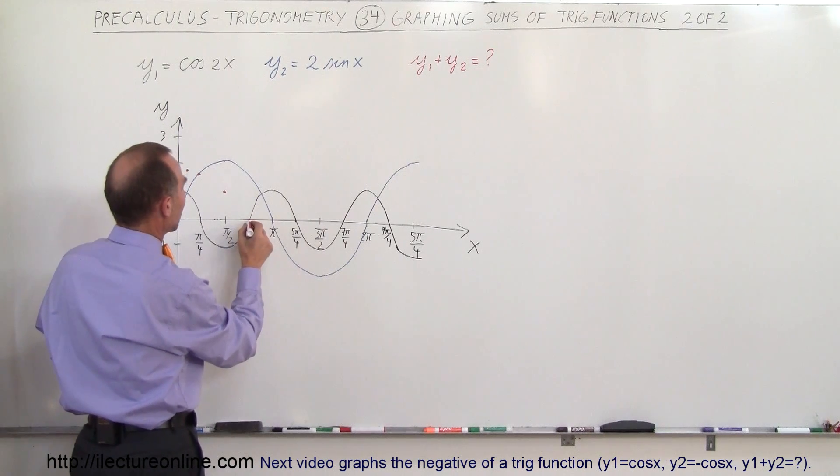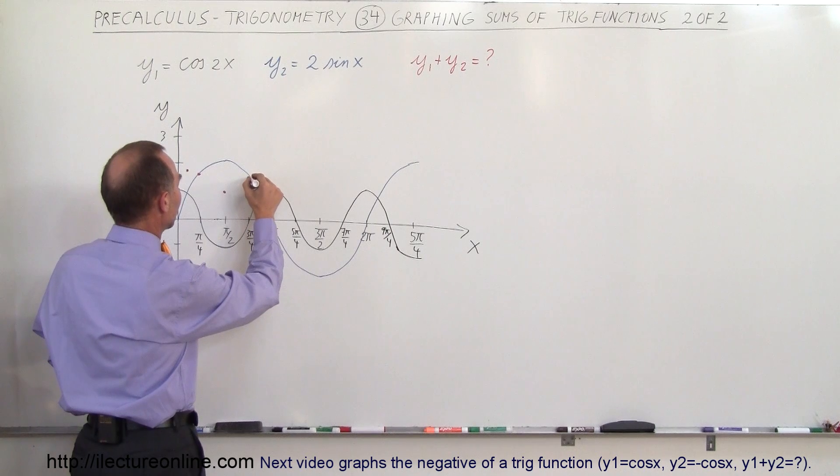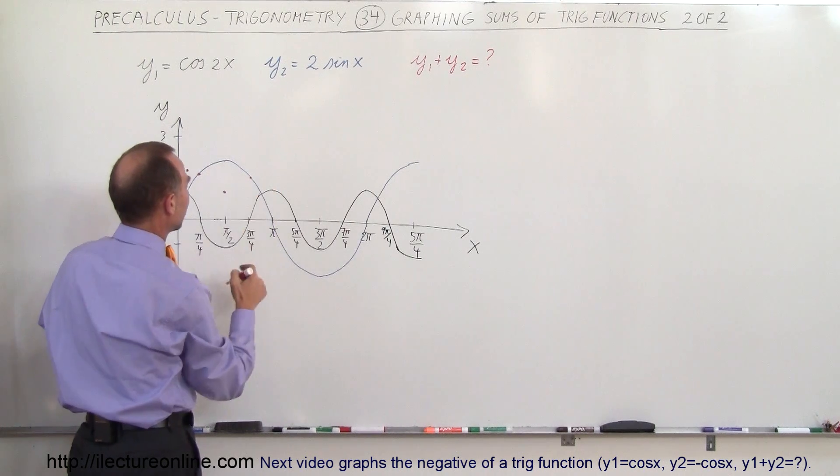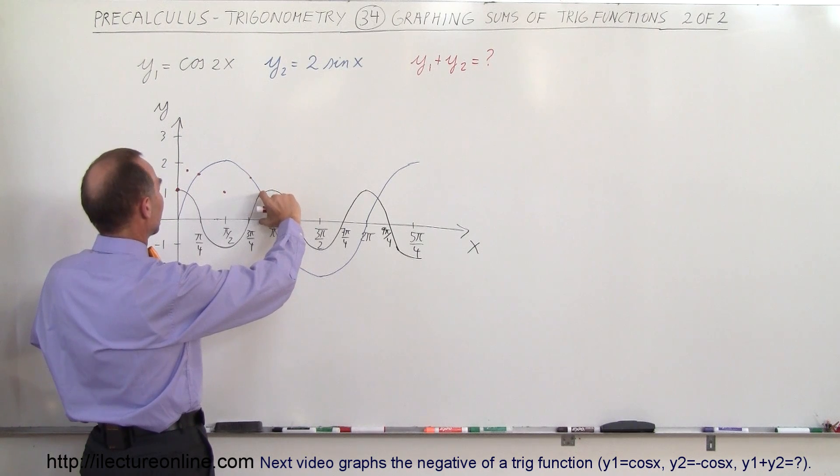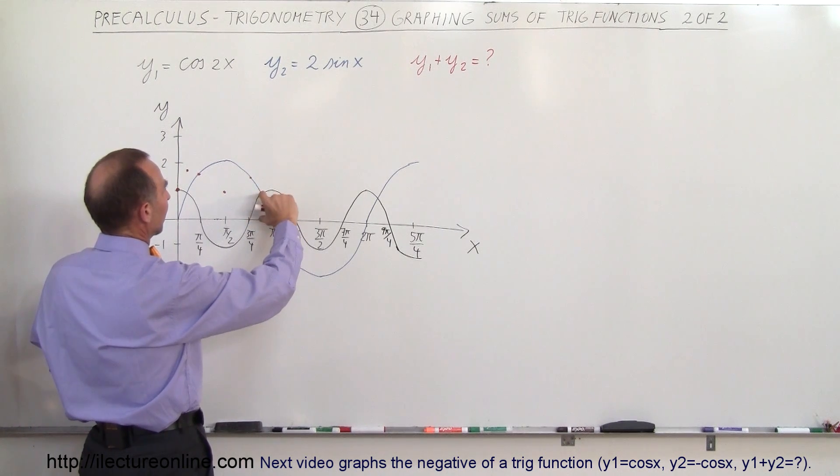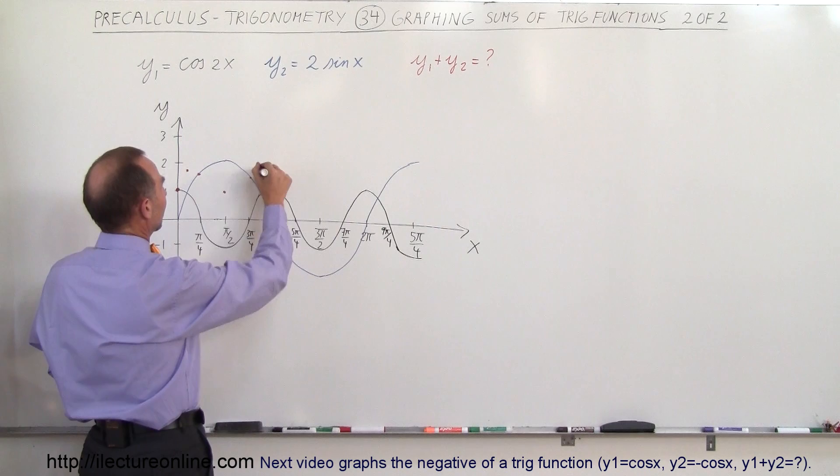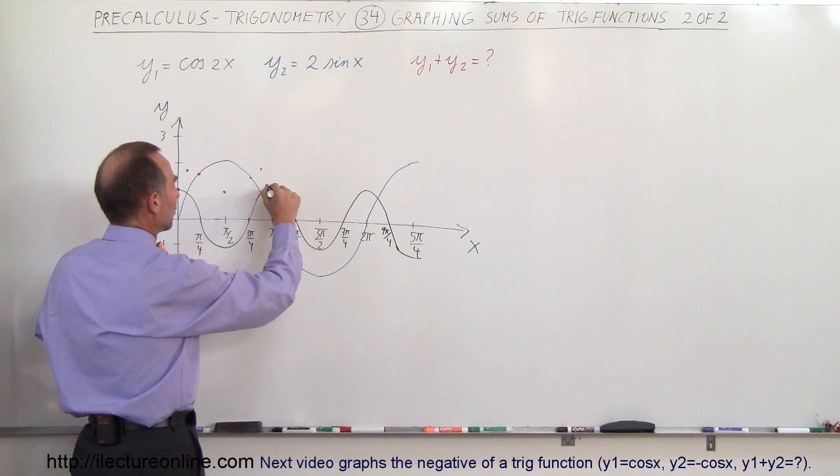Over here at 3 pi over 4, notice that the cosine function is 0, the sine function is something slightly larger. Over here, you simply add these together, that will be about slightly less than 1, so maybe about like this. And over here, you're back to 1.